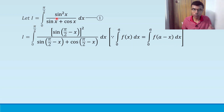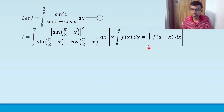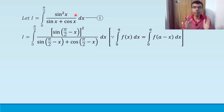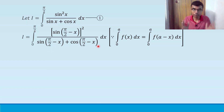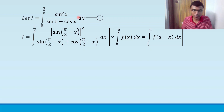Here, what is my a? It is π/2. So instead of x, I substitute π/2 minus x in the given function. I can replace x with π/2 minus x, and the limits of the definite integral won't change. So instead of sin²x, I wrote sin(π/2 minus x) whole square, and wherever I see x I replaced it with π/2 minus x.